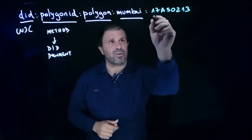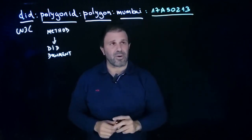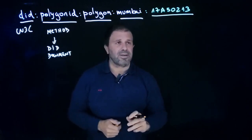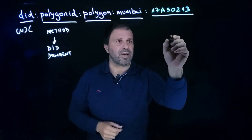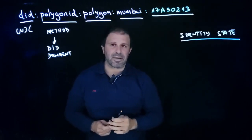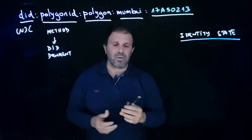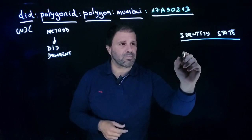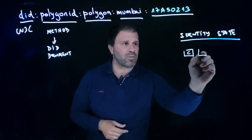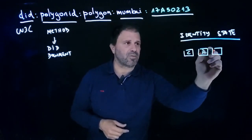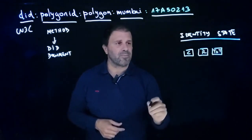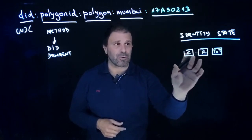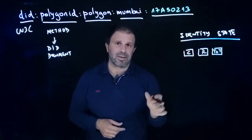Let's focus on the unique part of your identifier — what really makes your identity different from any other identity. This is created using something called the identity state. The identity state is the way we use in Polygon ID to represent an identity. It's a collection of Merkle trees: one Merkle tree for claims, one Merkle tree for revocations, and another for keeping track of versions, called the tree of trees. These three Merkle trees contain the information that expresses the status of an identity at a certain point in time.